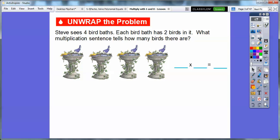Steve sees four birdbaths. Each birdbath has two birds in it. What multiplication sentence tells how many birds there are? We've done these in several ways. Basically here's a bird, a little yellow one, and here's a blue bird. There's two birds in each one, so there are four groups of two. We'd represent that as four times two and they would give us eight birds. Remember doing that in one of the last lessons?